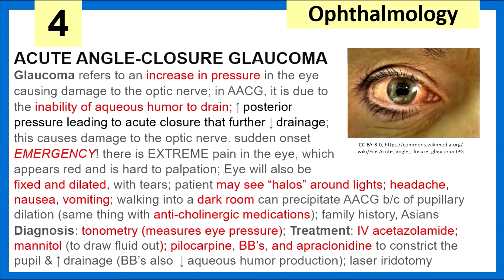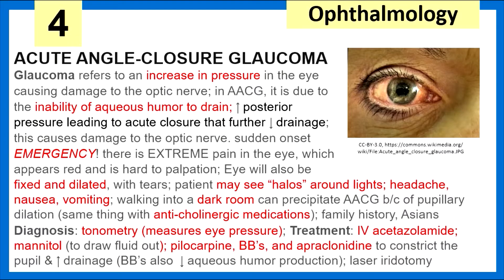Acute angle closure glaucoma — think extreme pain, extreme emergency, fixed and dilated pupil with tears, headache, nausea, and vomiting. It's precipitated by walking into a dark room or anticholinergics. We diagnose with tonometry and treat with IV acetazolamide and mannitol to draw fluid out, as well as topical pilocarpine, beta blockers such as timolol, and apraclonidine. Definitive treatment is with laser iridotomy.